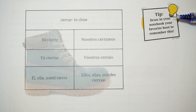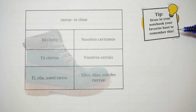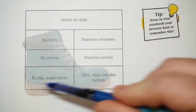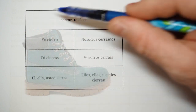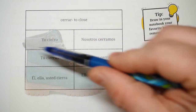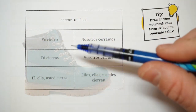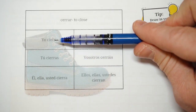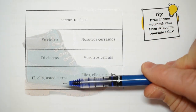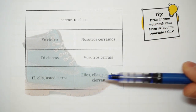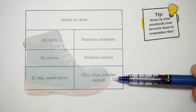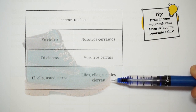Please draw in your notebook your favorite boot to remember this concept. Create a new box, split it in six parts, and draw a boot in the first person, second person, third person, and also third person plural. Stop the video to do all that.